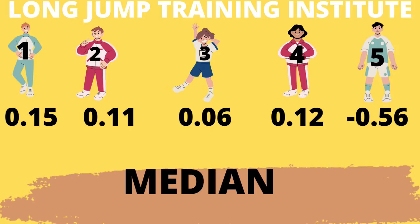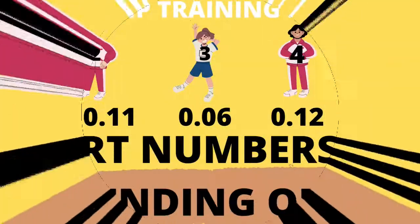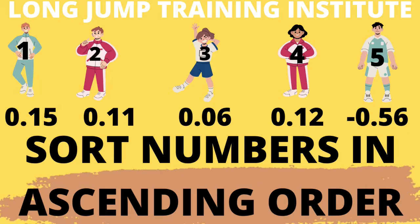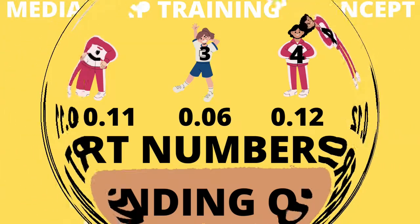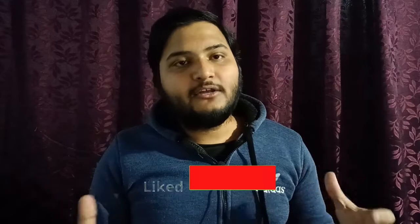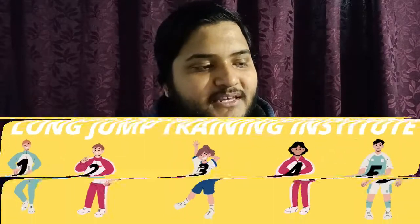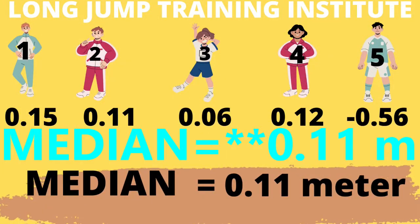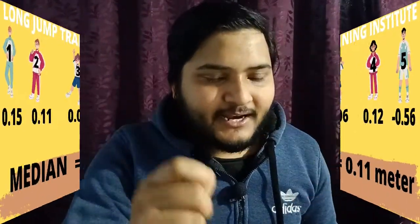Now let's look at the median function. These are all the improvement numbers produced by the athletes in the coaching institute. To calculate the median, first we need to sort the numbers in ascending order. On screen, I've provided all the steps and an example through which you can clearly understand how to calculate the median value.